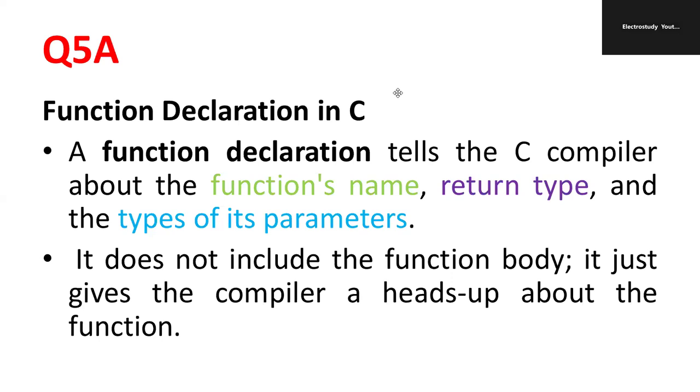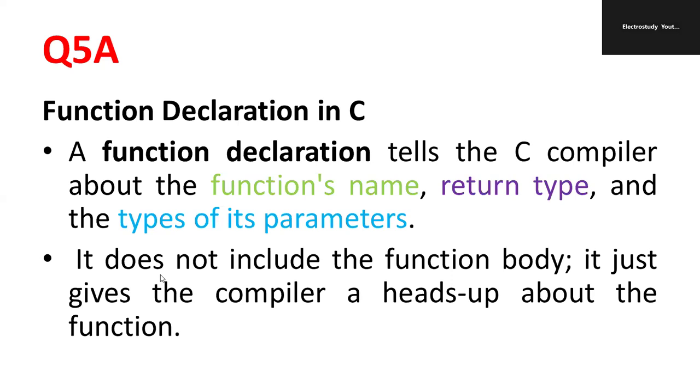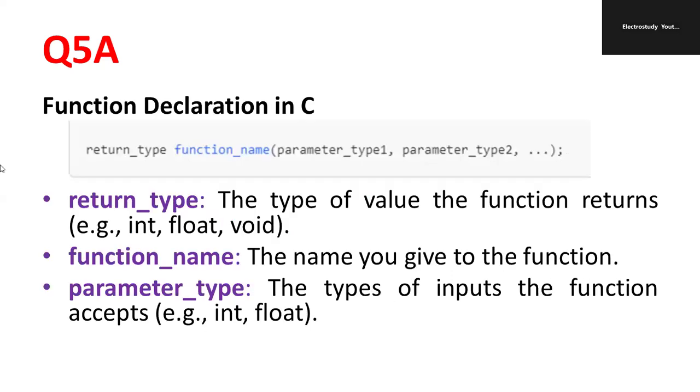Let me discuss in brief function declaration in C programming. Function declaration tells the C compiler about the function's name, then return type and types of parameters that you are supposed to remember. These three points are most important. It doesn't include the function body. It just gives the compiler a heads up about the function. Give the brief introduction like this. Three parameters you have to talk about.